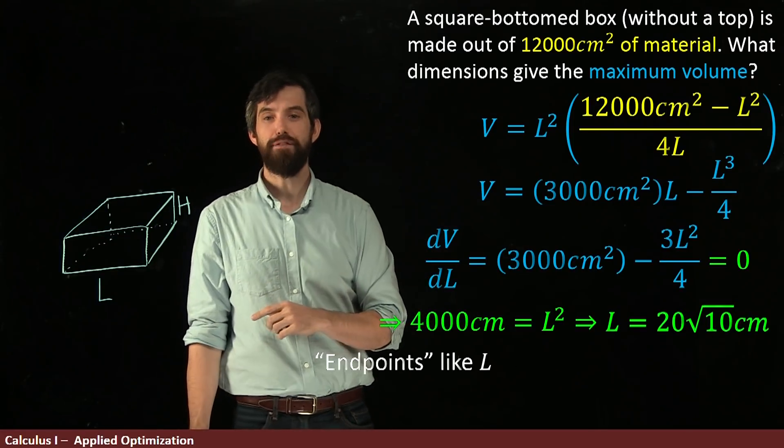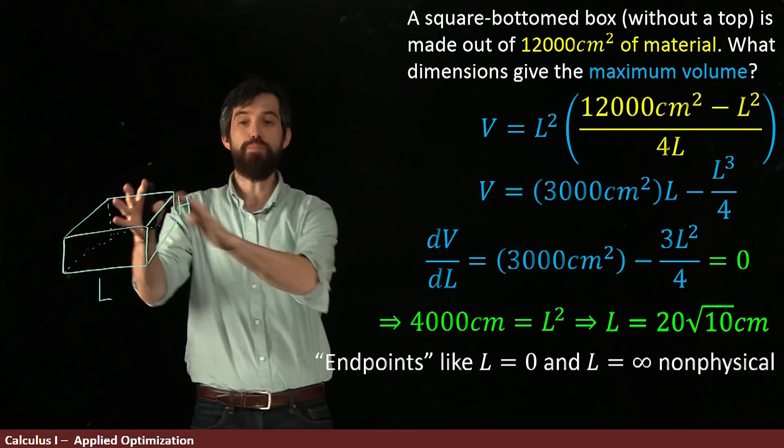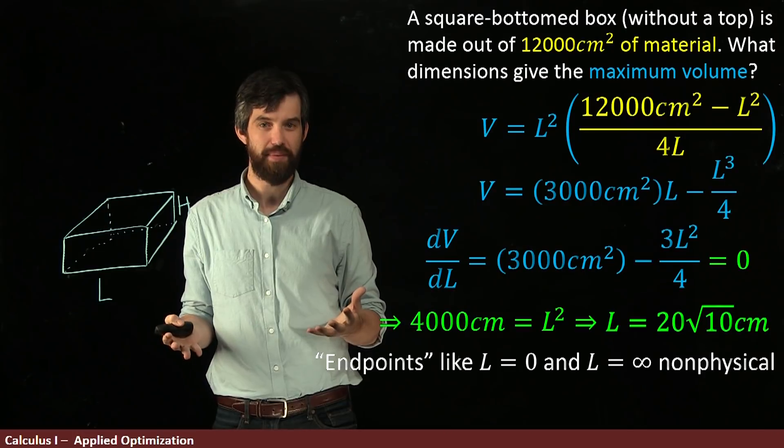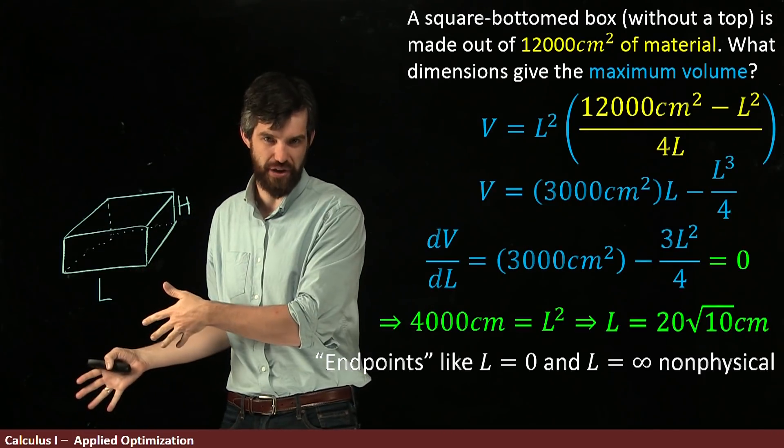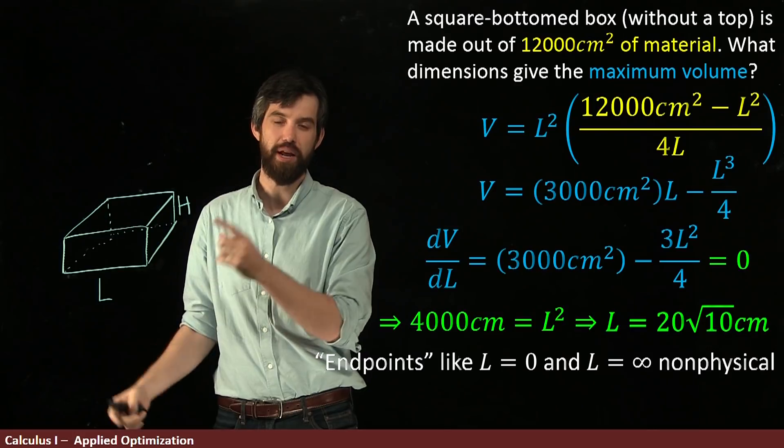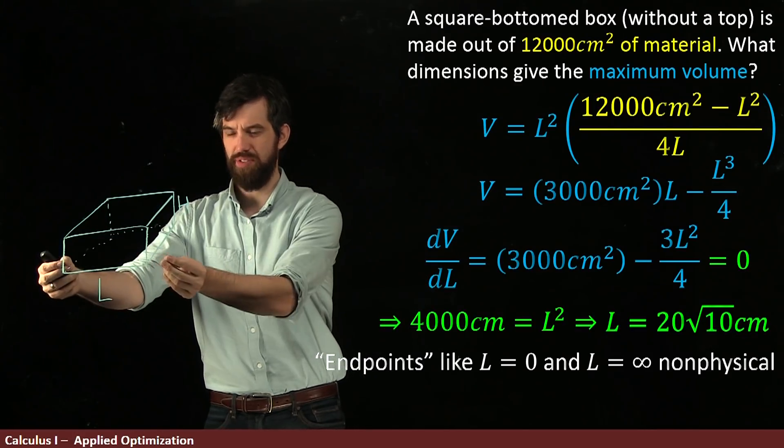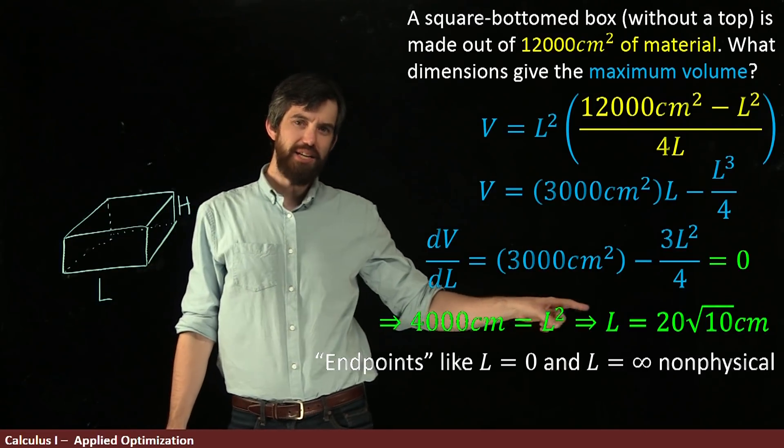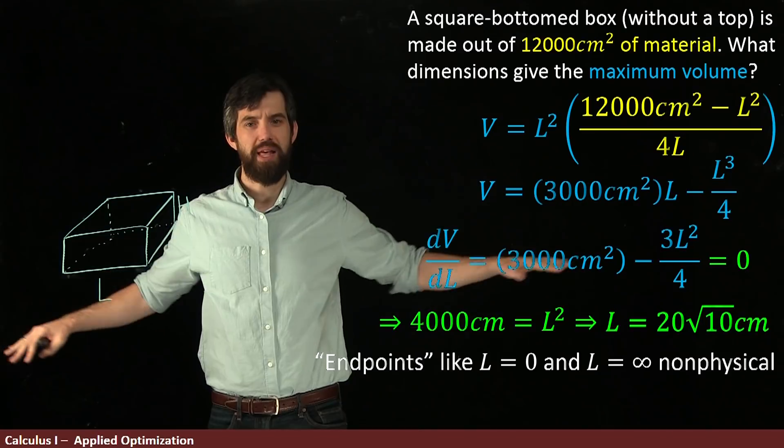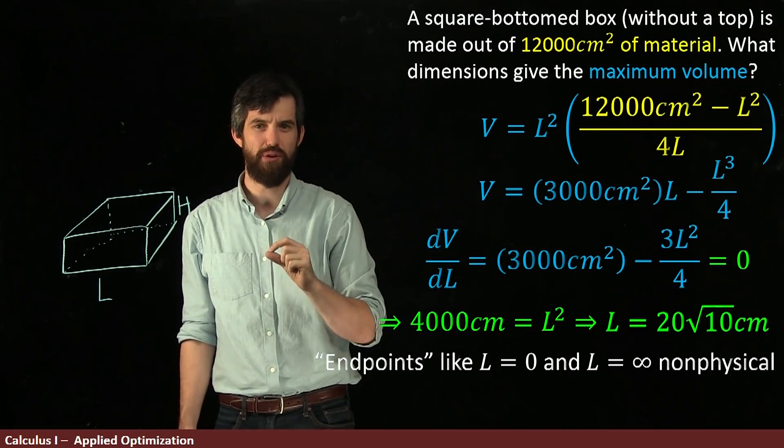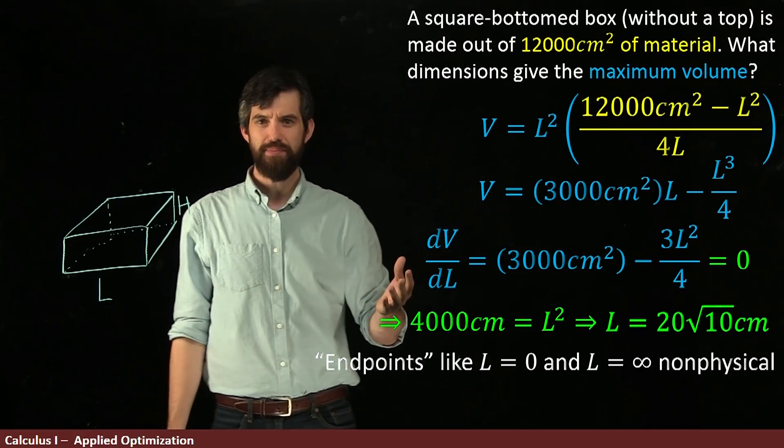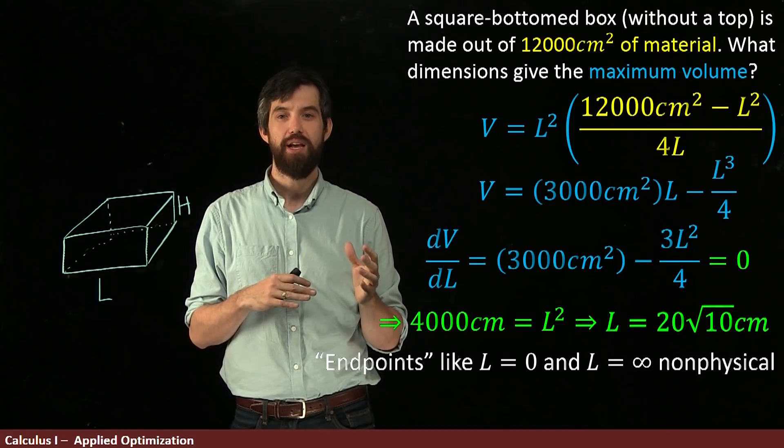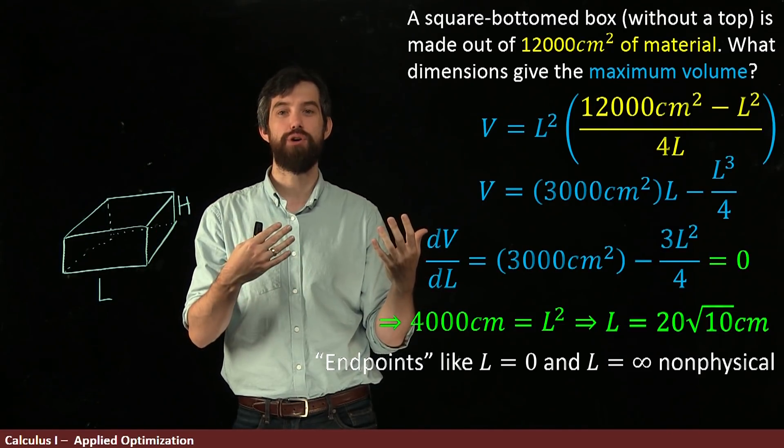There's a couple of things that I want to check. The first point to make is that the endpoints under consideration, that neither of them physically makes a box with volume. Like, I certainly can't have negative values of L. That doesn't make any sense. A negative length doesn't make sense. But if L is zero, then this is a box with no base at all. That has no volume. If L is infinity, so this is like an infinite plane on the bottom, that would force my height to be zero. So again, it would have no volume.